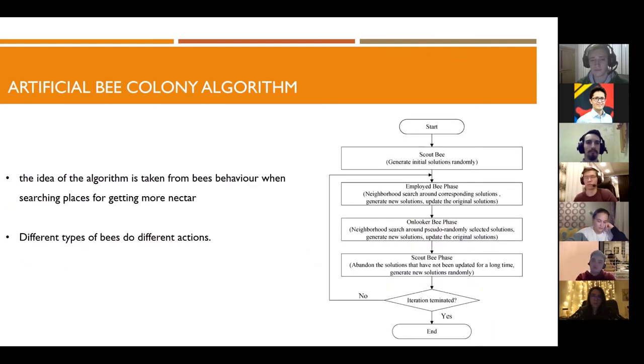The second algorithm is artificial bee colony algorithm. The idea of this one is taken, as you can already guess from the name, from bees. Namely, from the behavior when searching for places where they can get as much nectar as possible. First, a number of scout bees fly out in a random direction, trying to find areas where there is nectar. After some time, the bees return to the hive.